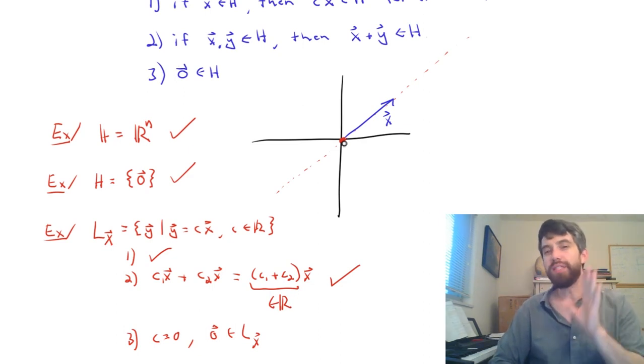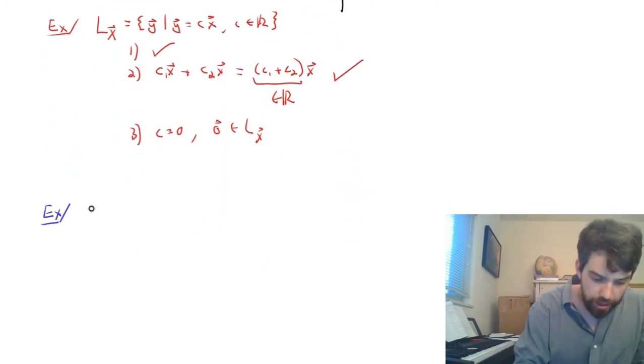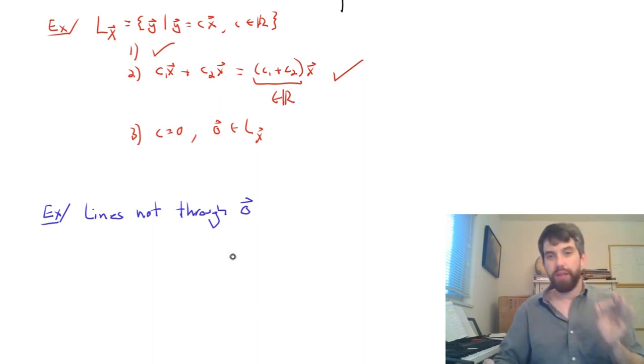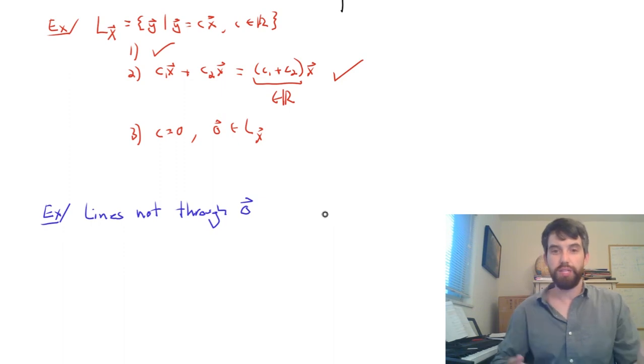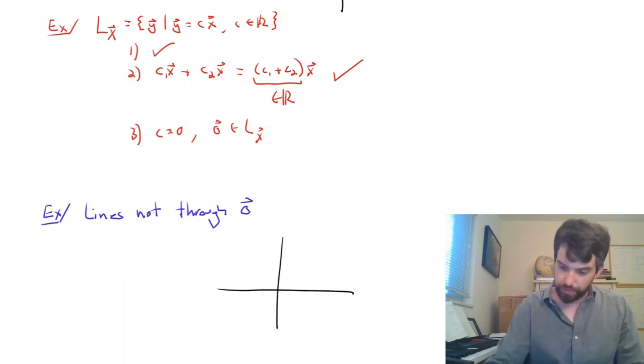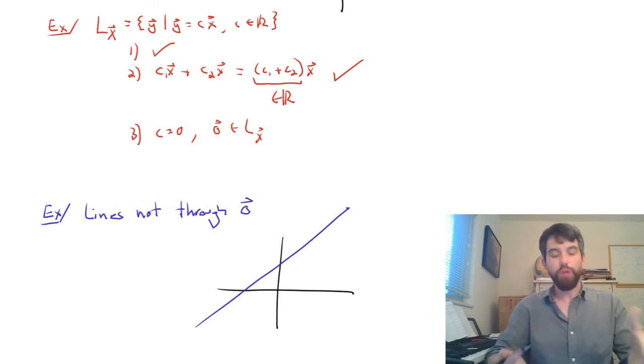I'm going to give one more example. This is an example where it is not going to be a subspace. That is, I want to consider lines that are not going through the origin. So, the idea here is that if I have some particular axis and I draw a line that is not going through the origin, now you might look at this and be like, obviously, this is not a subspace. It doesn't have that zero vector in it. Well, I agree.